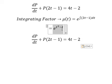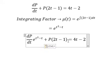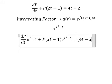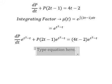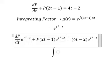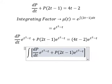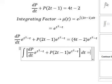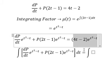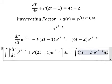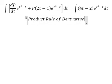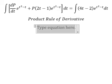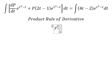So we multiply both sides by this integrating factor. Next, we apply the integral to both sides.